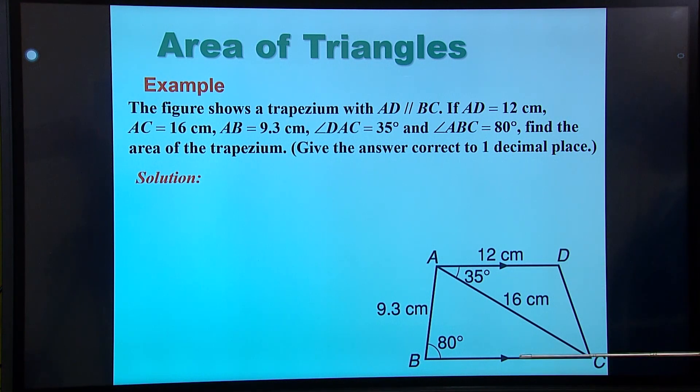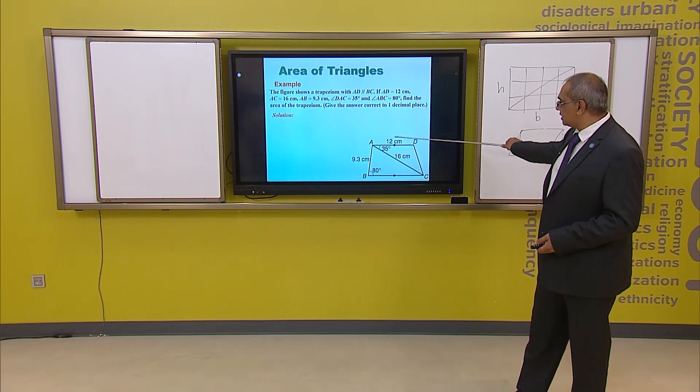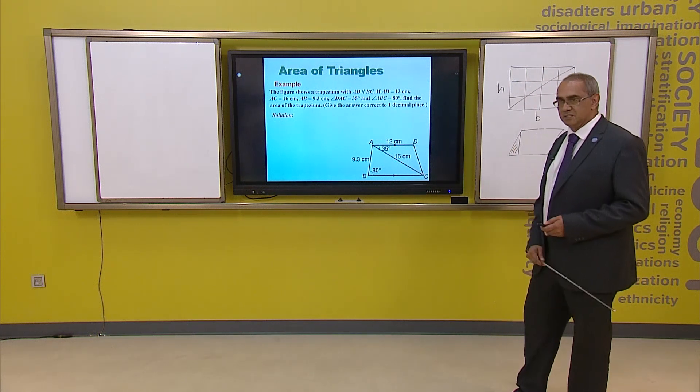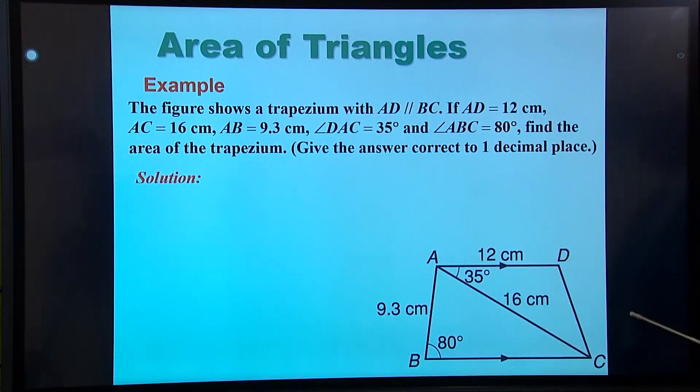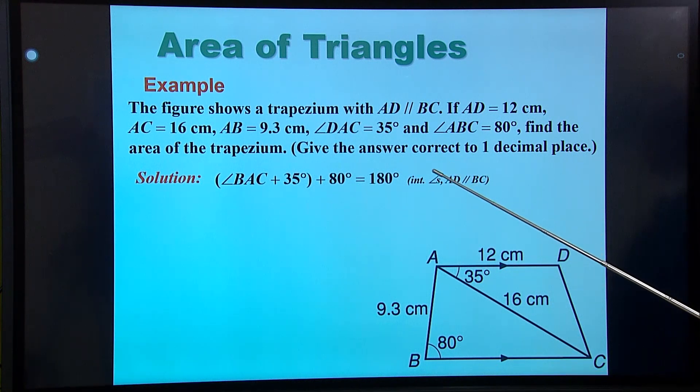These are parallel lines. Always remember to look for these things. So if the lines are parallel, all the angles in between them are supplementary. So they all add up to 180 degrees. So using that fact, I can work out angle A. So BAC plus 35 plus 80, 180 degrees. So that tells me what BAC is.